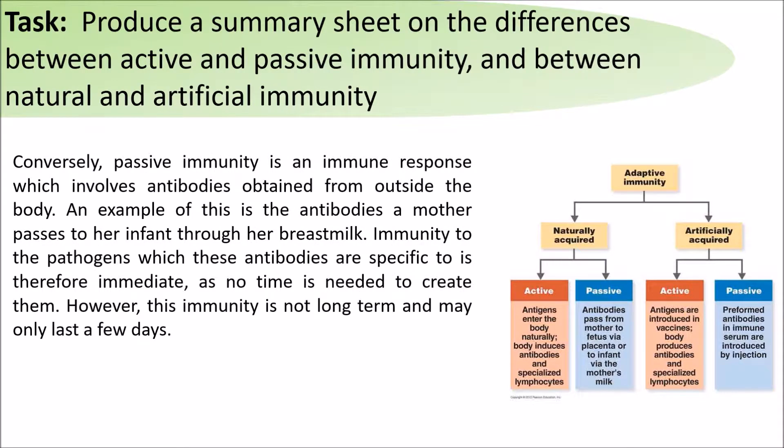Passive immunity is an immune response which involves antibodies obtained from outside the body. An example of this is the antibodies a mother passes on to her infant through breast milk. Immunity to the pathogens which these antibodies are specific to is therefore immediate, as no time is needed to create them. However, this immunity is not long-term and may only last a few days.